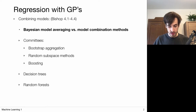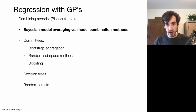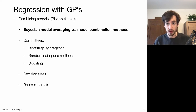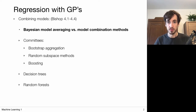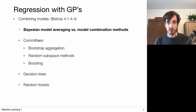We're going to talk about methods for combining models, covering chapters 4.1 up to 4.4 of the book of Bishop. I'll start by placing Bayesian model averaging — which we have already seen — in the context of this more general approach to model combination methods. This more general approach relies on the notion of committees of experts, of classifiers or predictive systems.